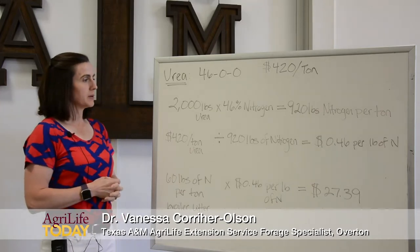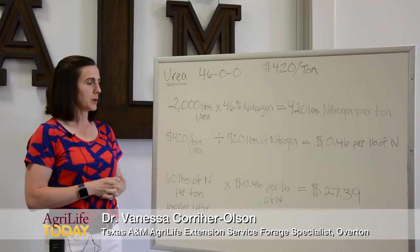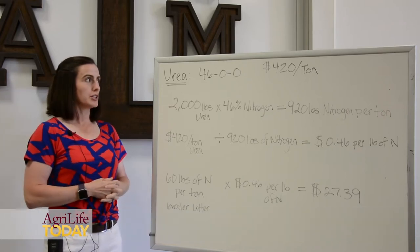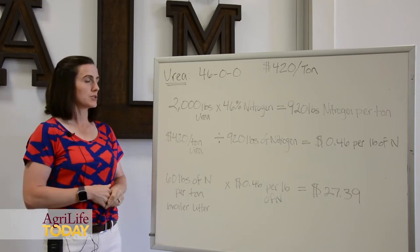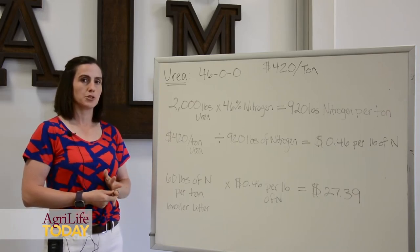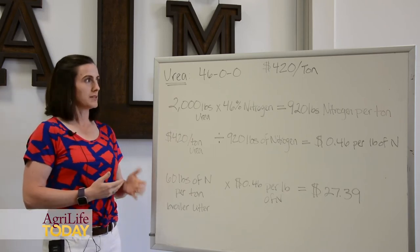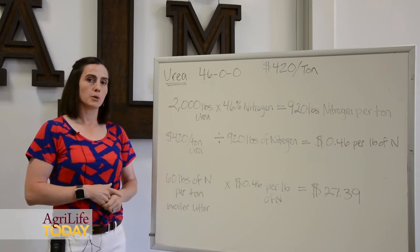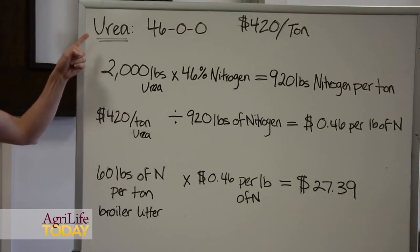Here we're going to talk about how to determine the value of nitrogen within poultry litter sources, specifically within broiler litter. We're going to look at the value of nitrogen in a traditional fertilizer source — how much nitrogen costs in a traditional source such as urea — and use the cost of that traditional source to determine the value of the nitrogen in broiler litter. So we're going to compare broiler litter to urea.